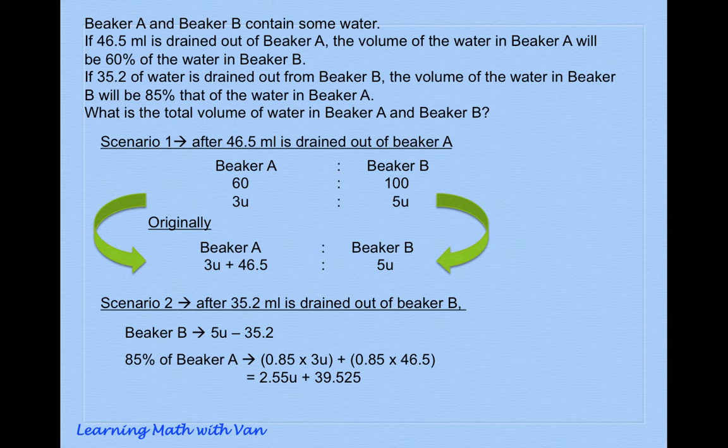So you see we have an equation now: 5U minus 35.2 is equivalent to 2.55U plus 39.525. With that, students will know how to continue and solve the units and eventually the total volume of water in the two beakers.